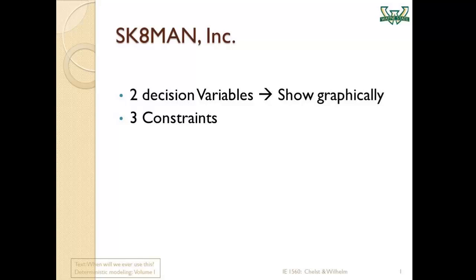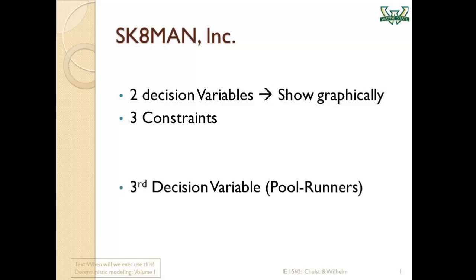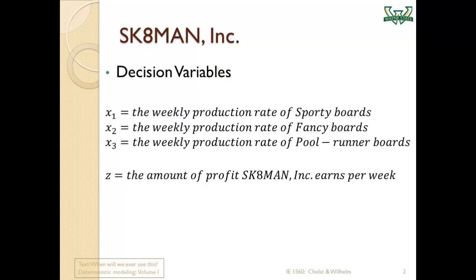In the earlier videos, we first introduced the SCATEMAN problem with two decision variables and three constraints, including the non-negativity constraint. We then added three more constraints. Because there were only two decision variables, we could represent the problem graphically and demonstrate the optimal corner point principle. When we add one more decision variable, pool runners, we can no longer find the optimal solution graphically. Recall that the linear programming formulation for this version of the problem looks like this.